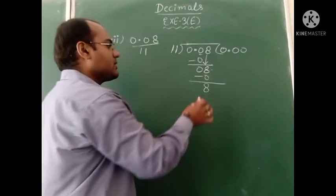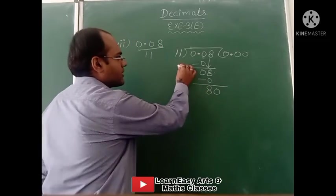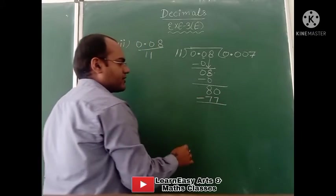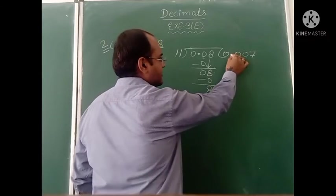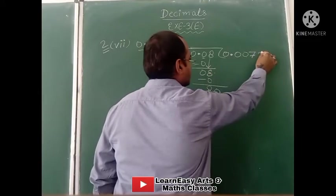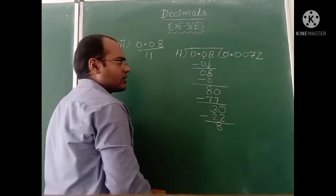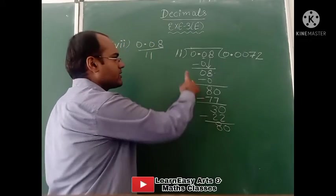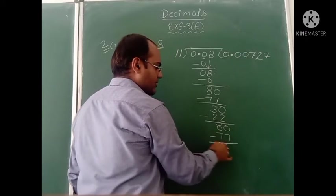Because of the decimal, we add 0, making 80. 11 times 7 is 77. On subtracting, we get remainder 3. Decimal is there, so we add 0. This is 30 now. 11 times 2 is 22. On subtracting remainder, we get 8. Decimal is already in the answer, so we add 0, making 80 again. 11 times 7 is 77. Remainder is 3.